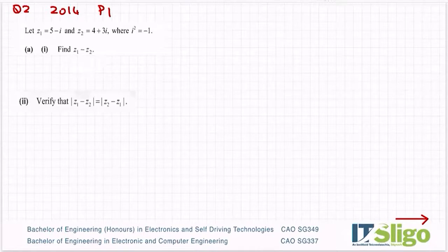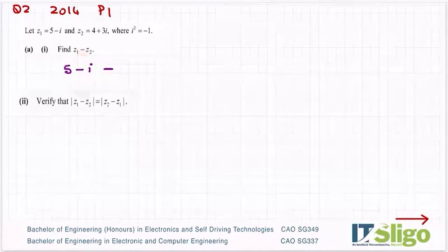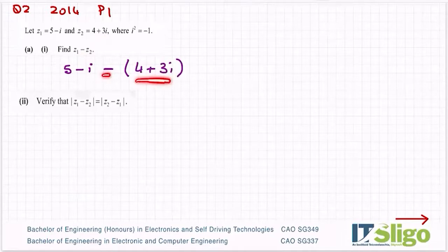Find Z1 minus Z2. So to do this, instead of Z1, put in your 5 minus i. Take away - now be careful of signs always when takeaway's in the middle. So I would always put a bracket there even before I look at what Z2 is. And Z2 is 4 plus 3i. Because this has two elements in it, that minus is going to change the sign of both of these parts.